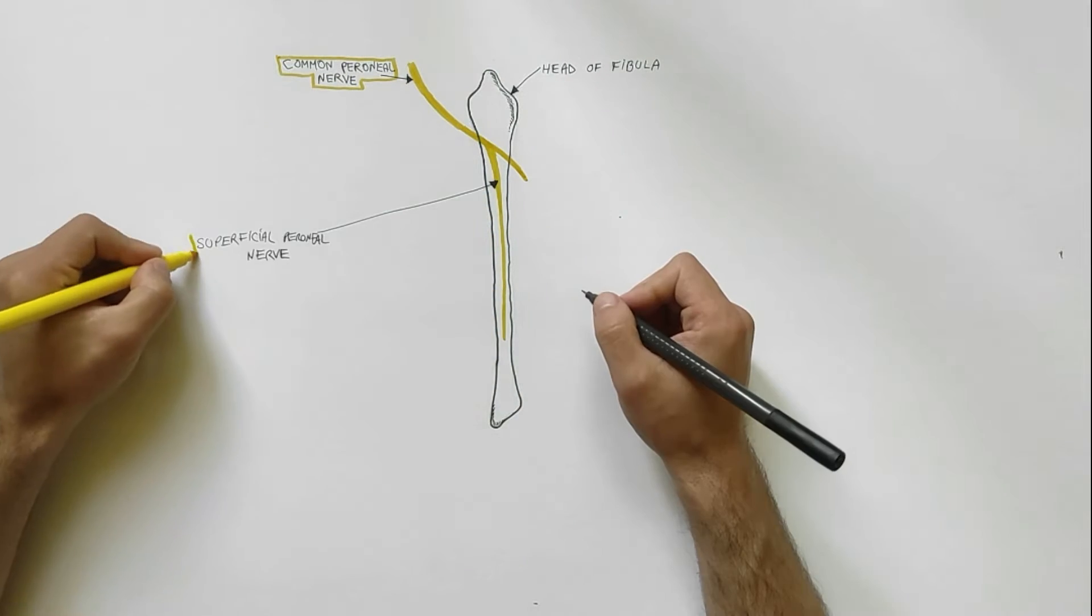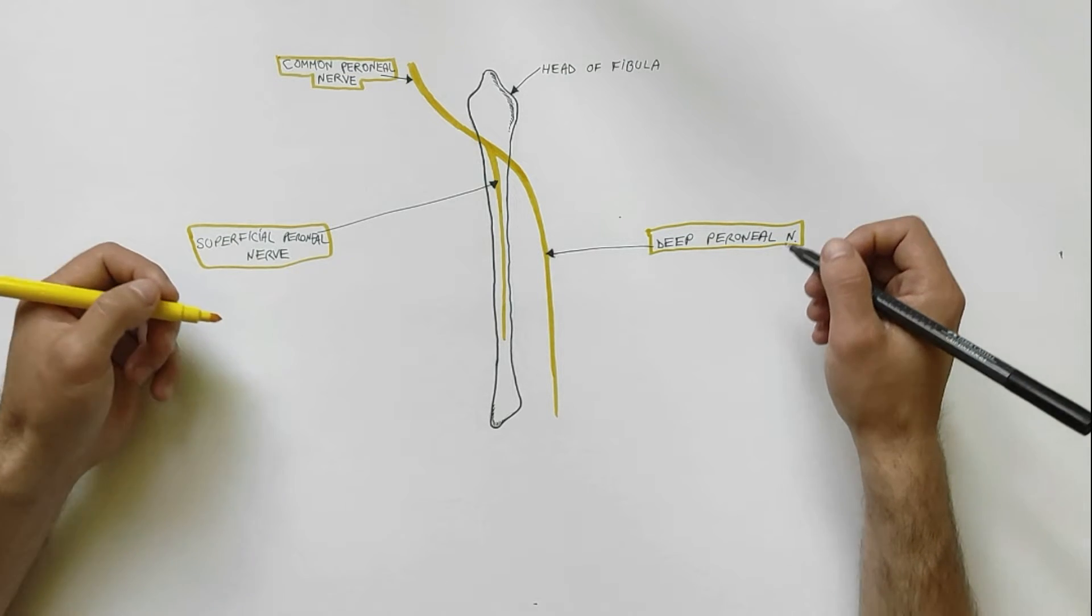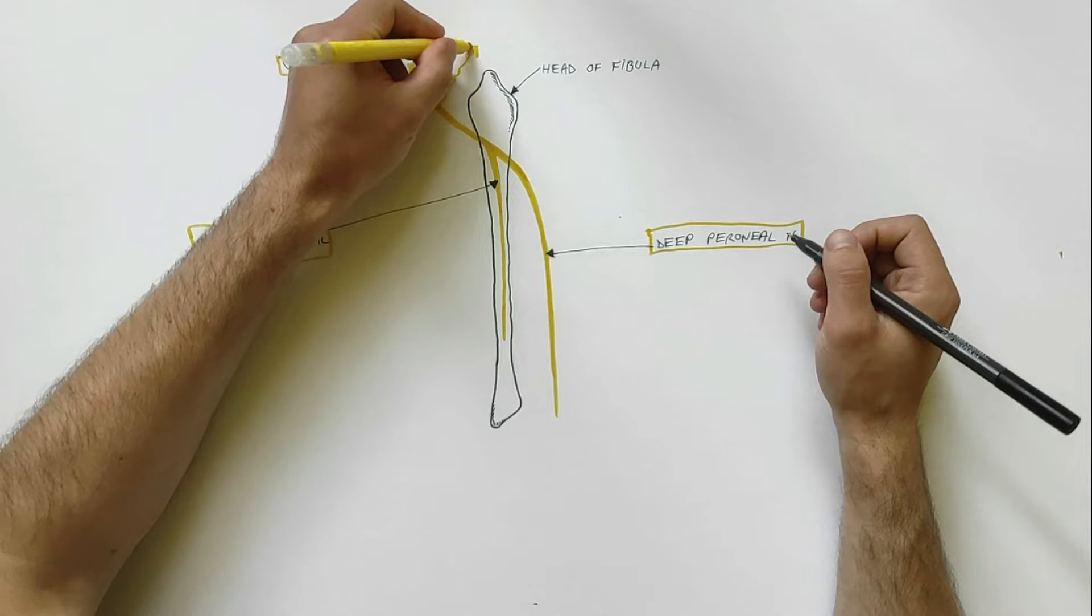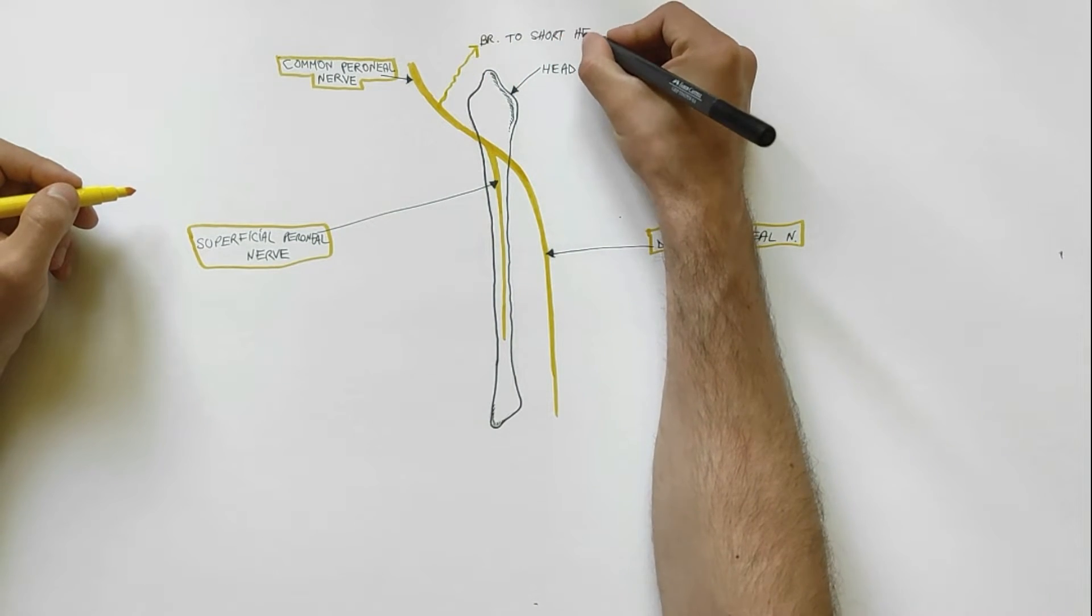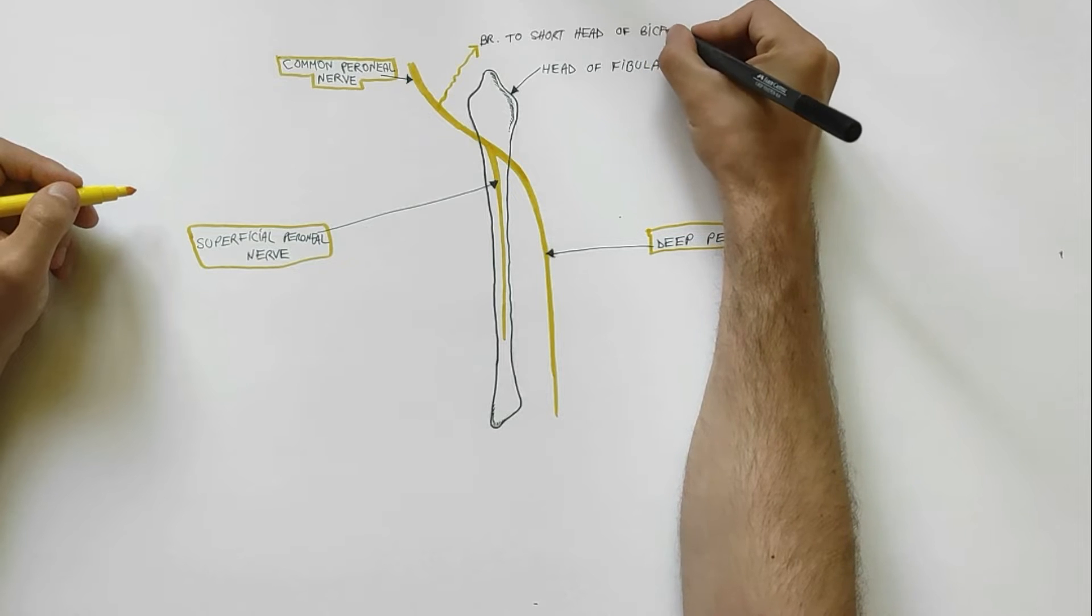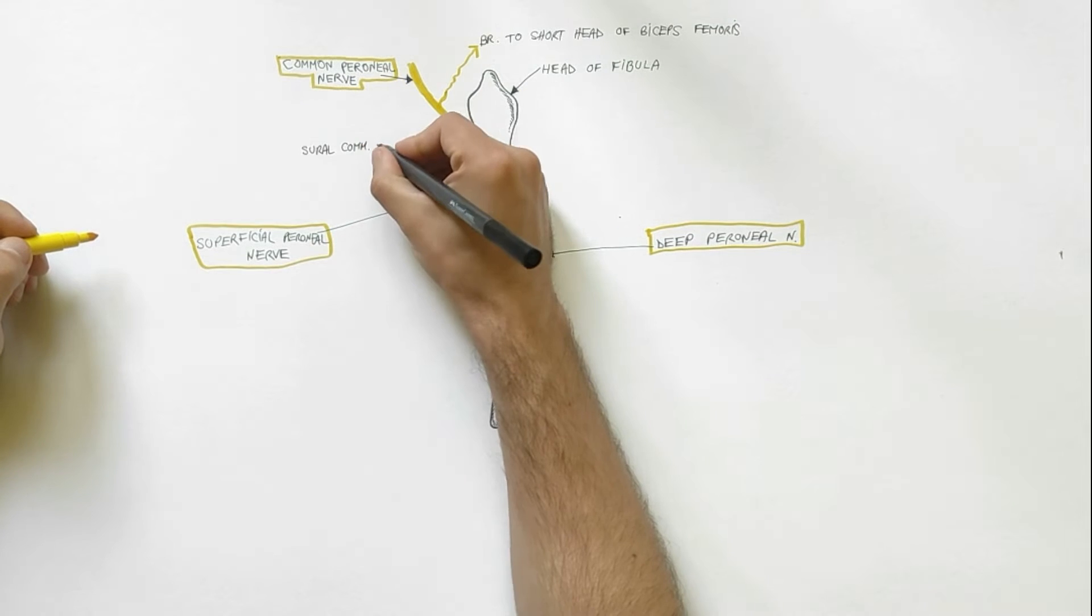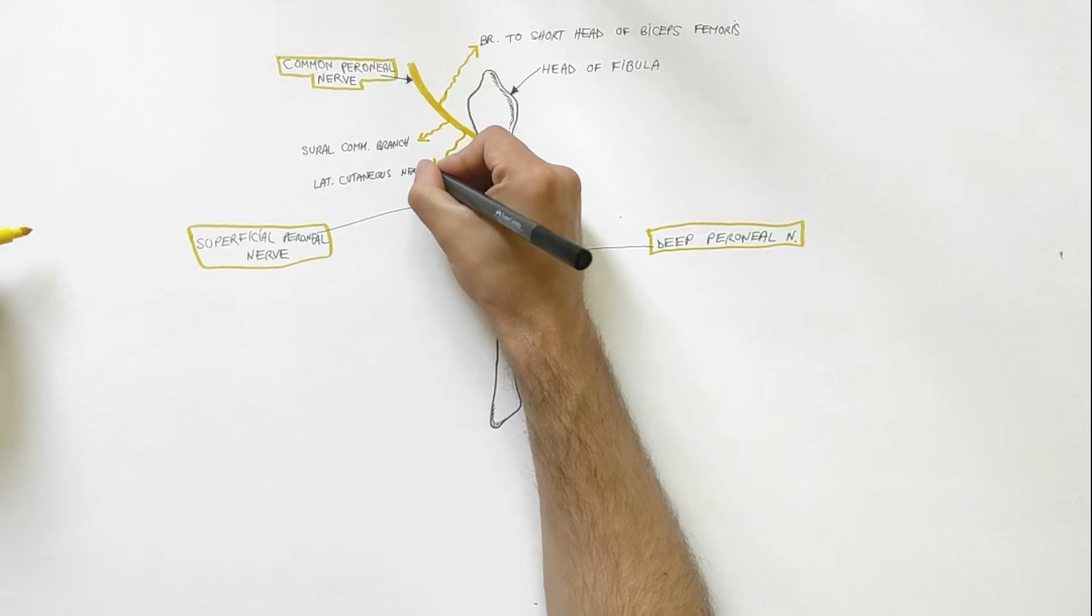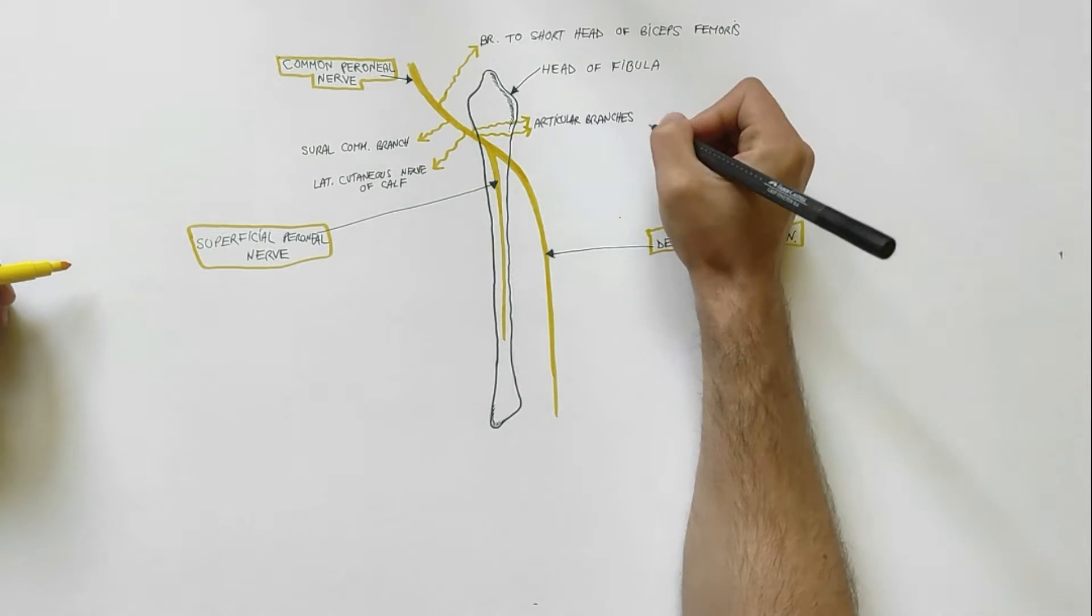The superficial peroneal nerve and deep peroneal nerve. Before its division, the common peroneal nerve gives off several branches in the popliteal fossa: branch to short head of biceps femoris, which is the only motor branch arising directly from the common peroneal nerve; sural communicating branch; lateral cutaneous nerve of calf; and few articular branches for the knee joint.